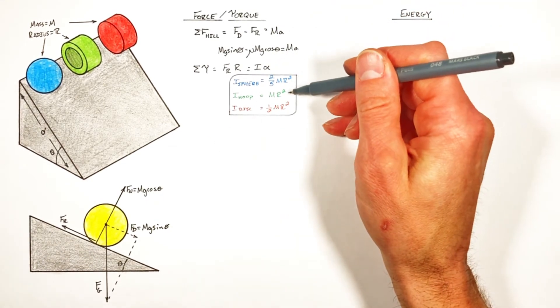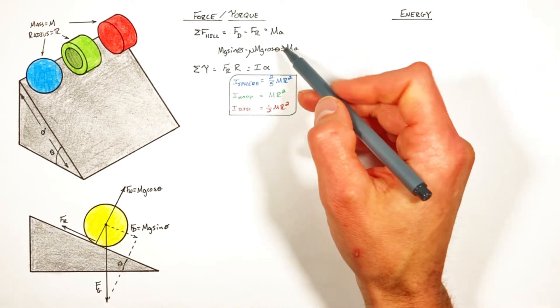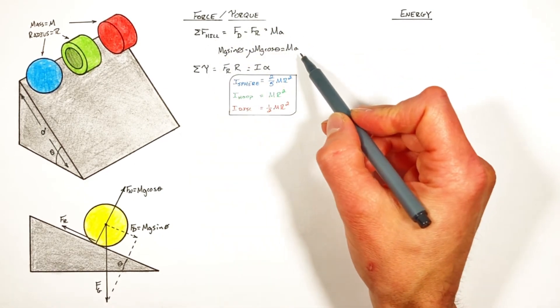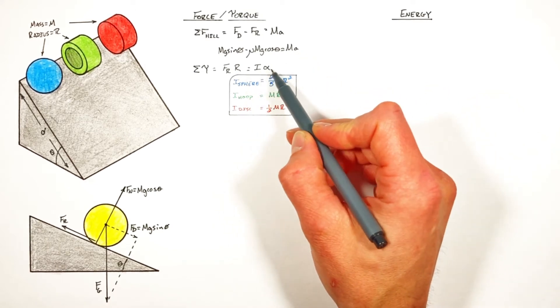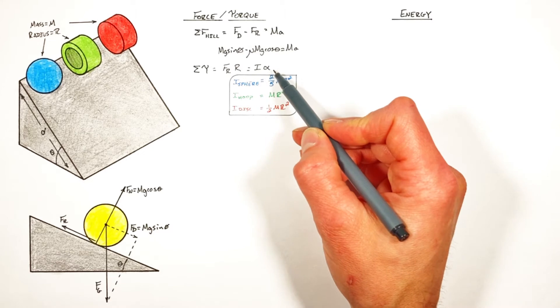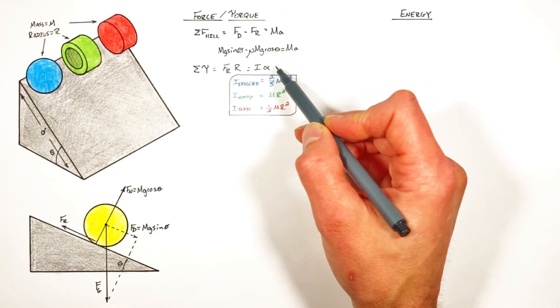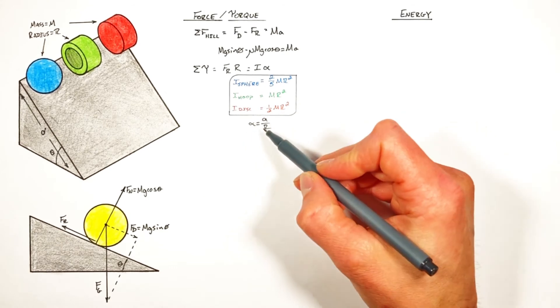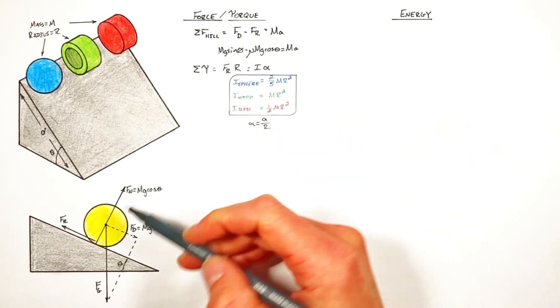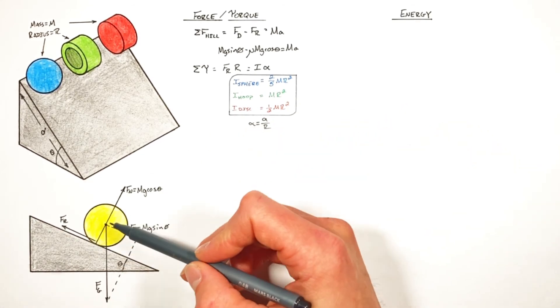But regardless of which object we're dealing with, we have a problem here. Our linear motion was given in terms of a, the acceleration we're trying to solve for. The rotational motion is given in terms of alpha, the angular acceleration. So we need to relate these two where alpha is given by a over r, the radius of this rotating object.